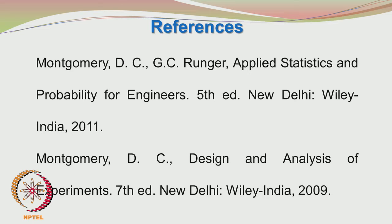Looking at the references, we have the book written by Montgomery and Runger, Applied Statistics and Probability for Engineers. This is a concise book starting with probability, moving on to inferential statistics, hypothesis testing, parameter estimation, method of maximum likelihood, probability distributions, and also factorial and fractional factorial designs. It is a single-point reference for both students and practitioners. We also have a more detailed book by Montgomery covering more advanced designs, and we will be referring to both during this lecture.